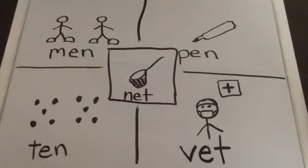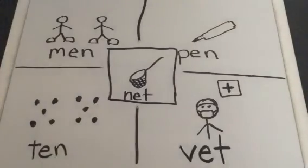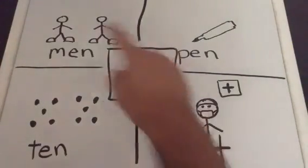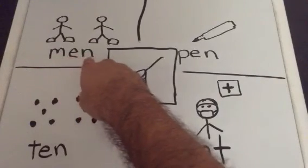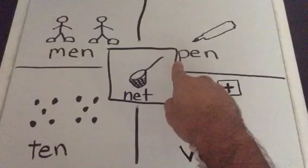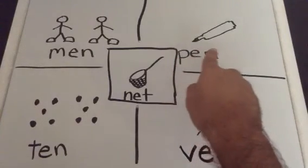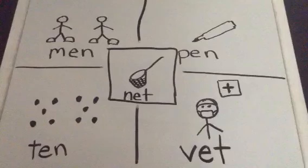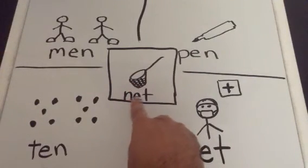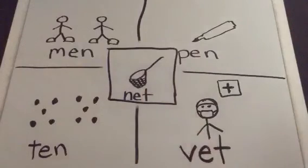So, these are our spelling words. Now, remember, you can always pause this if I was going too fast. Let's go over our spelling words. First, we have men. M-E-N. Men. Pen. P-E-N. Pen. Ten. T-E-N. Ten. Vet. V-E-T. Vet. And net. N-E-T. Net. And what do all these words have in common?